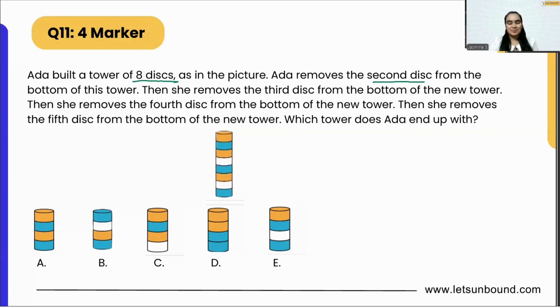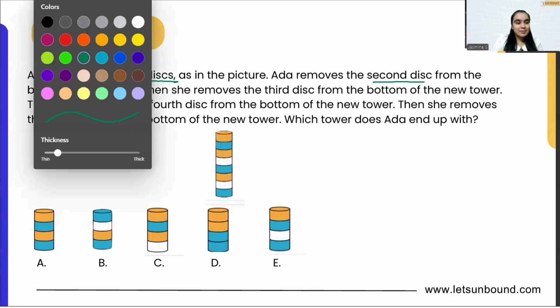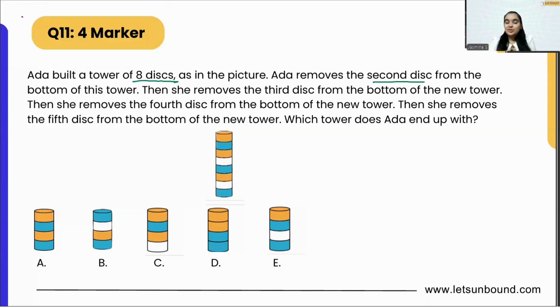To start with this problem, very importantly, you have to read the entire question nicely. As we can see, this tower has how many discs? Eight discs, right. That means to start with, Ada removes the second disc from the bottom of the tower.